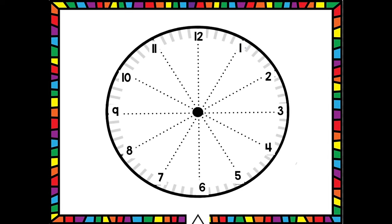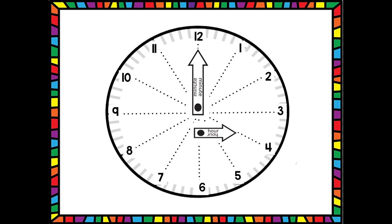Here is my minute hand. Cut out your minute hand and then place it so that it is pointing up at the twelve. When the minute hand — that's the longer one — is pointing at the twelve, that means it is at exactly the hour mark. That minute hand is going to be at the twelve any time it is an exact hour.